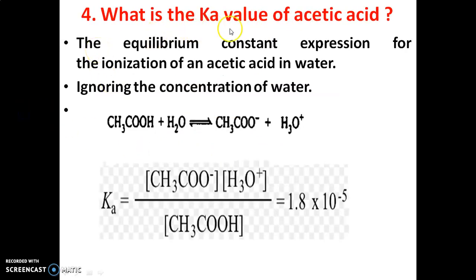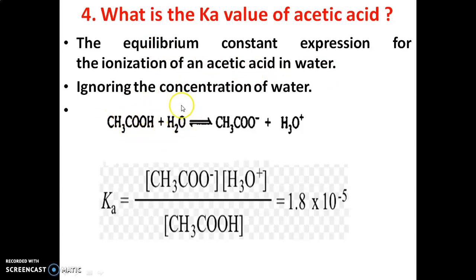Fourth question: What is the Ka value of acetic acid? The Ka of acetic acid is equal to 1.8 × 10⁻⁵ (or 1.75 × 10⁻⁵). This is the equilibrium constant expression for the ionization of acetic acid in water. Acetic acid is a weak acid; it undergoes partial ionization and gives fewer H⁺ ions, producing CH₃COO⁻ and H₃O⁺ (or H⁺).